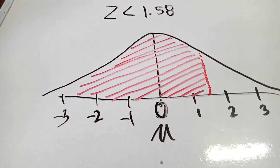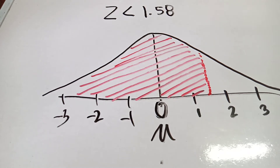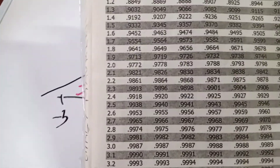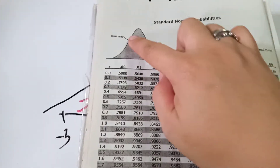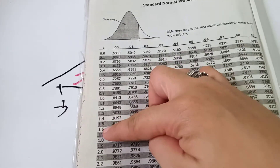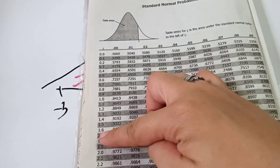What will be the value of 1.58? We will use the Z-table at the back of your textbook. We need to find the value of 1.58, so we look at the table image at the back of the book, starting at the row for 1.5 and the column 0.00.